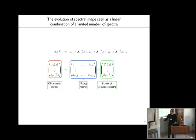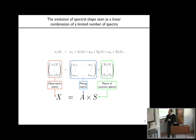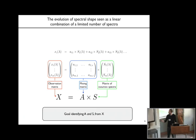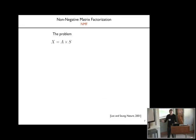For the sake of simplicity I'll write them in this form: you have the observation matrix, the mixing matrix, and the matrix of source or elementary spectra. Of course the goal is to identify the matrix A and the matrix S based only on the matrix of observations that we have. We only have this and we want to identify A and S—that's the problem.